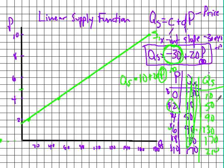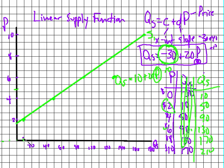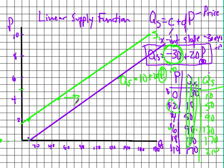You only need two points to plot the whole curve. At a price of $0 we're at 10; at $6 we're at 130. Drawing that line gives us the new supply curve S2. This is a shift — the whole line shifts to the right when C increases, and it stays parallel. A larger C shifts right; a smaller C shifts left.